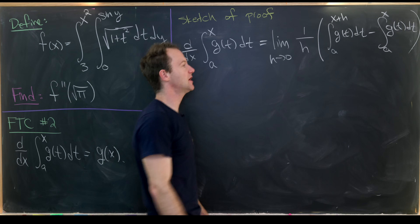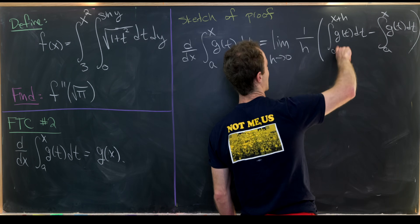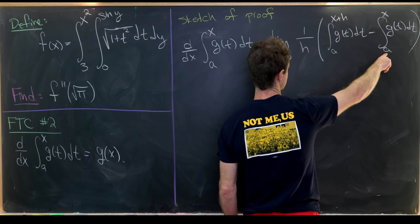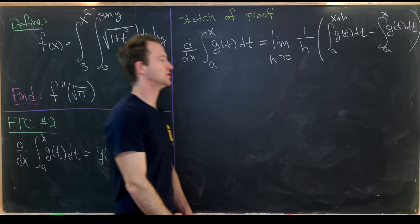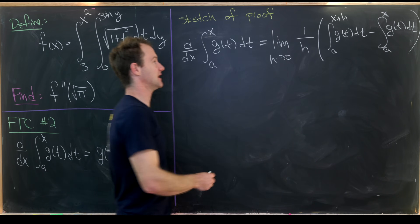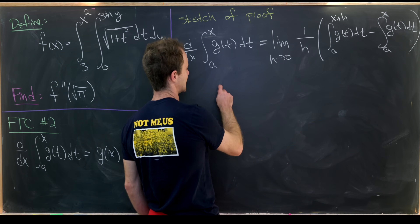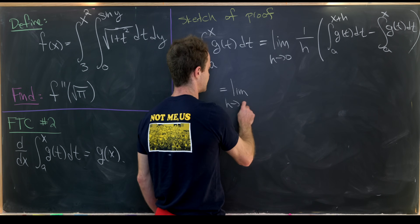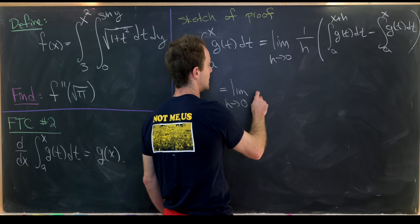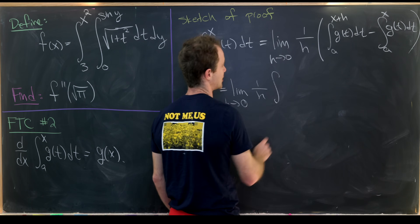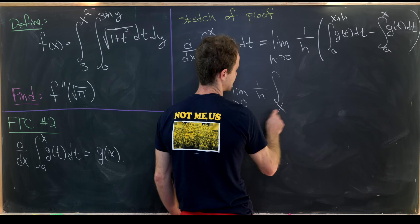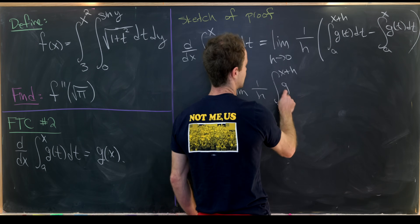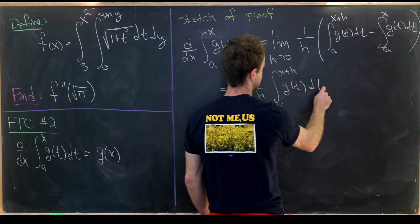We're taking the integral from a to x plus h and subtracting the integral from a to x. That leaves us with simply the integral from x to x plus h. So we have the limit as h approaches zero of one over h times the integral from x to x plus h of g(t) dt.